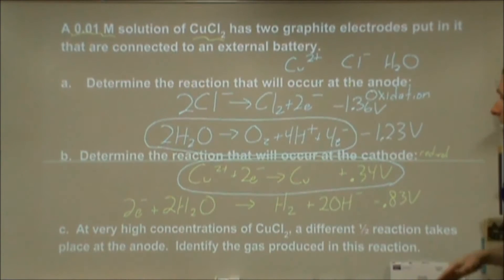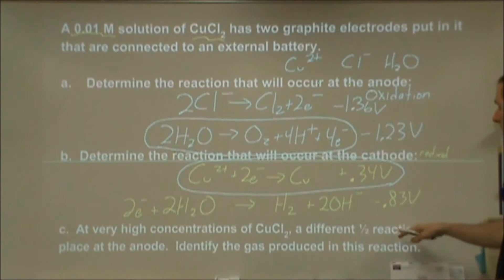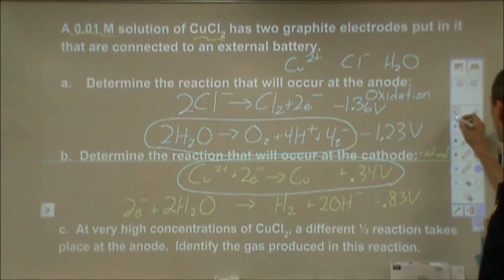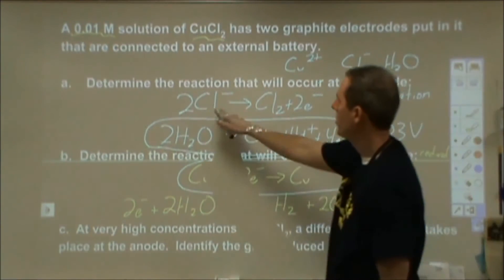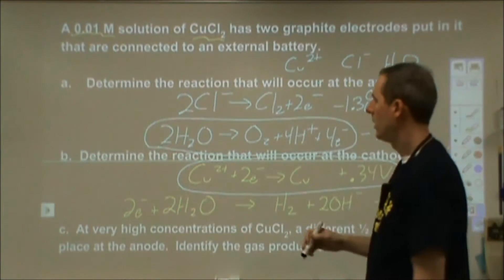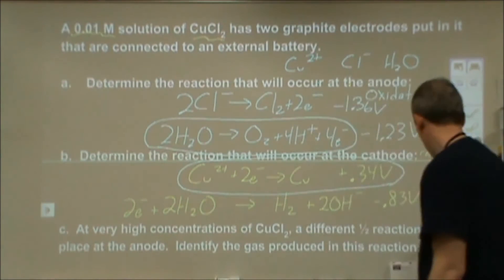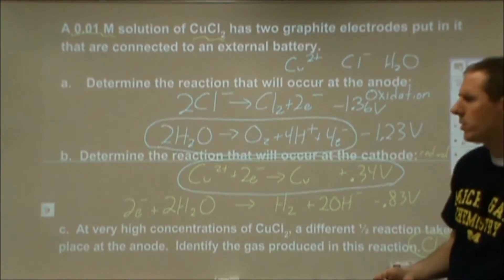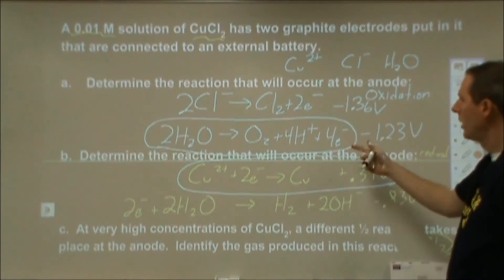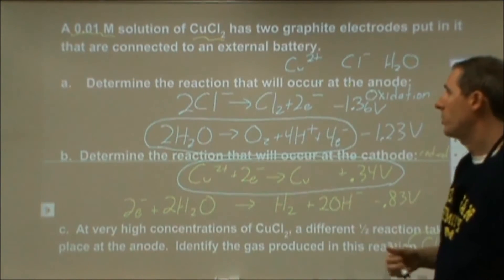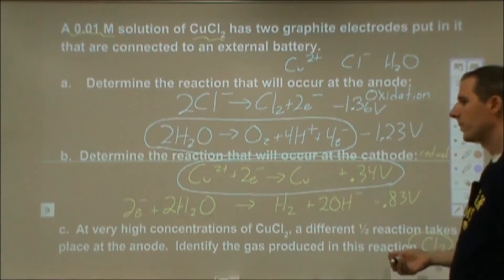So if we ran electrolysis on a copper 2 chloride solution, we would expect oxygen gas to be produced at the anode, and at the cathode we would expect copper metal to deposit. Part C says at a very high concentration — well beyond 0.01 molar copper 2 chloride — a different half-reaction takes place at the anode. As we increase the concentration, that's going to affect the voltage to the point where the chloride oxidation becomes preferable over water. The gas produced would be chlorine gas.